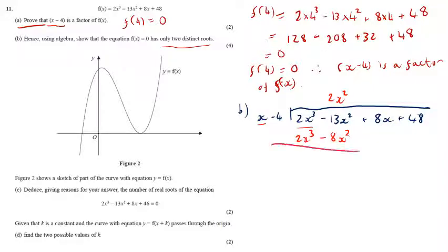And then we subtract. So we're doing minus 13 minus minus 8, which is minus 5x squared plus 8x. You then say how many x's going to minus 5x squared, which is minus 5x.